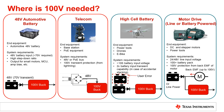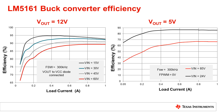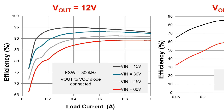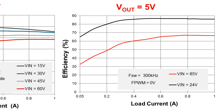Let's now take a look at the performance of the LM5161. These two are efficiency curves based off of different input voltages and output voltages. On the left side is the efficiency at 12 volts out at various input voltages at 300 kHz switching frequency. On the right is the 5 volt output voltage at 24 volts and 85 volts input voltage, again at 300 kHz switching frequency.